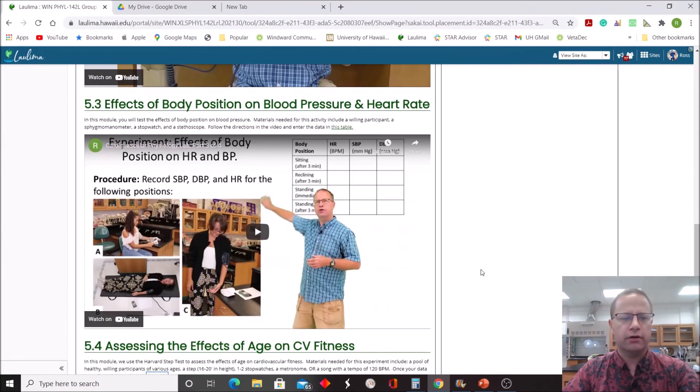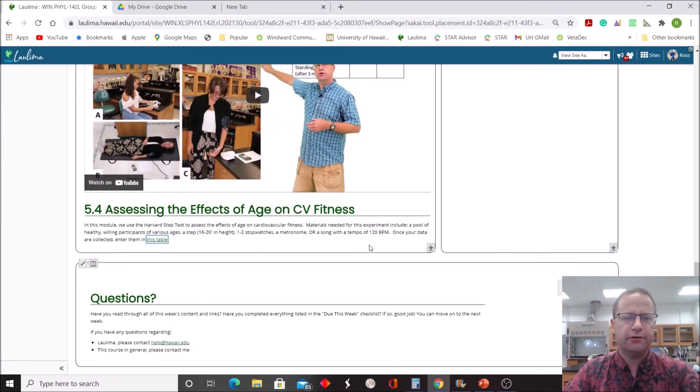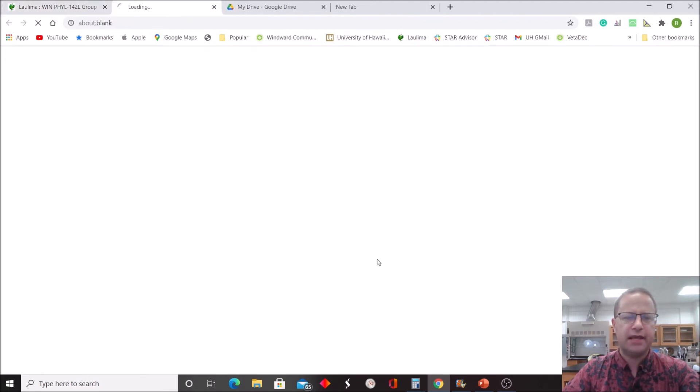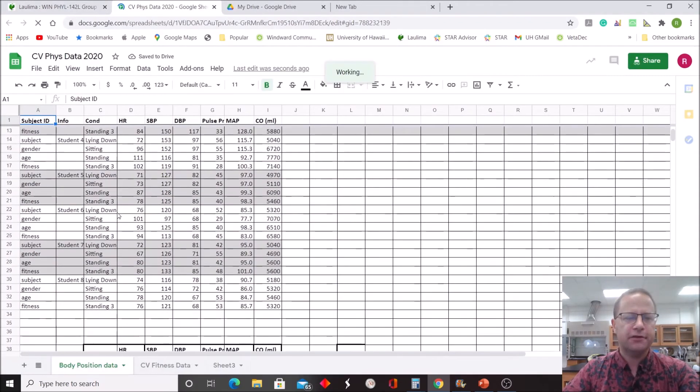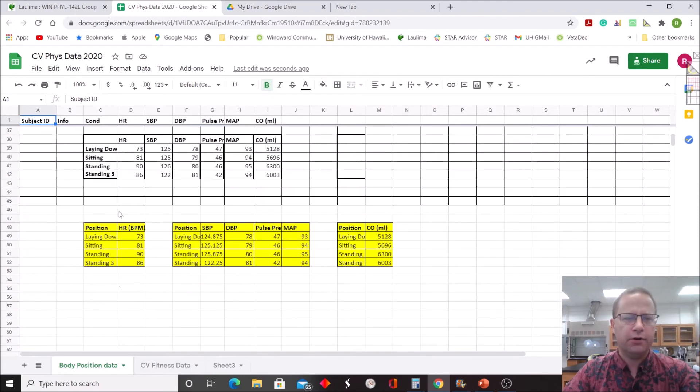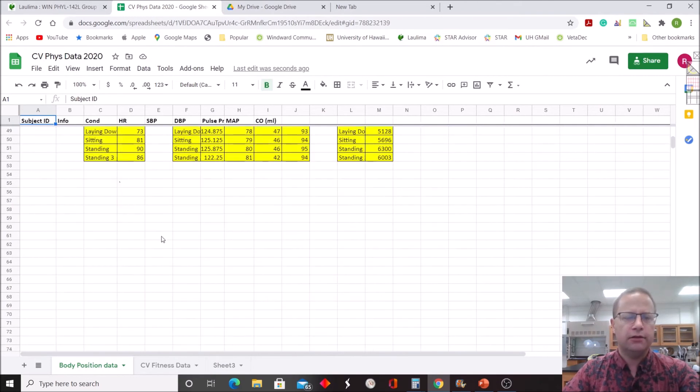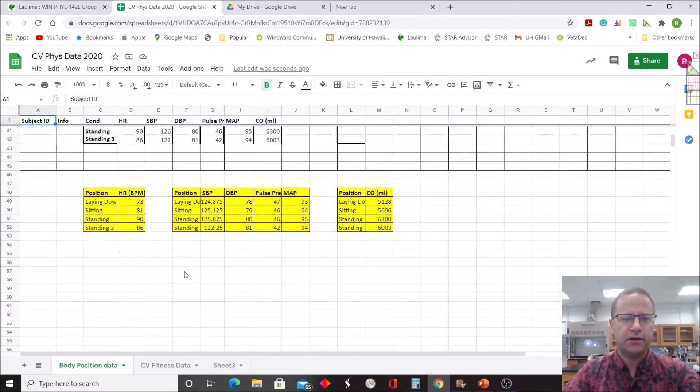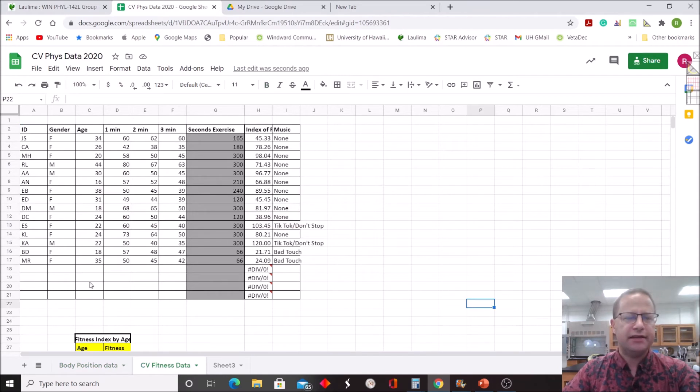Okay, so once your data are analyzed, you want to go back to the website under 5.4 and click on this table, and that will take you back to our Google Sheets table. Now, the first table you see there is the one we've already entered our data in for looking at the effects of body position on heart rate and blood pressure. So we want to go to the second table down here, the CV fitness data.